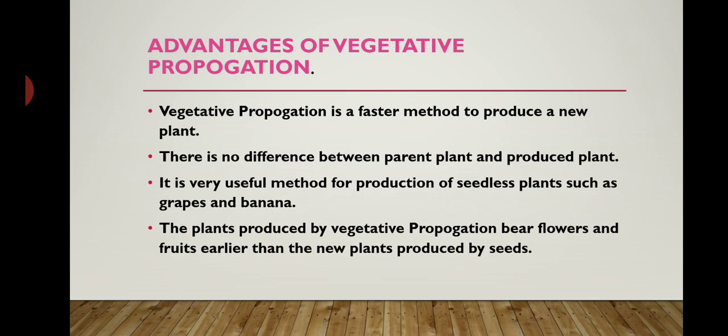The fourth advantage: the plants produced by vegetative propagation bear flowers and fruits earlier than new plants produced by seeds. Compared to plants grown naturally by seeds, plants grown by this method bear flowers and fruits very fast, so the production of new plants is very quick. These are the advantages of vegetative propagation.